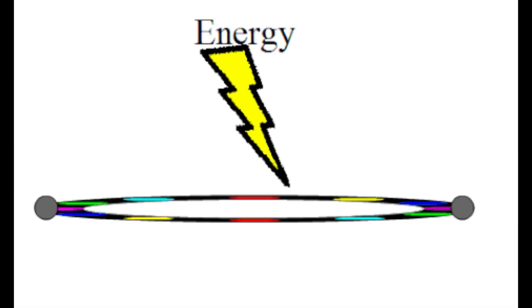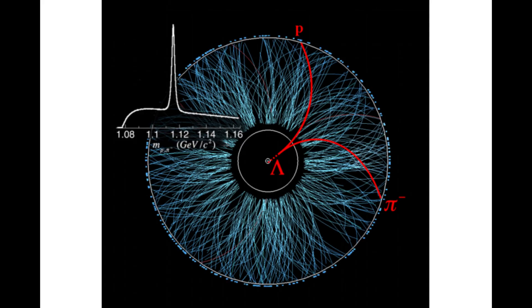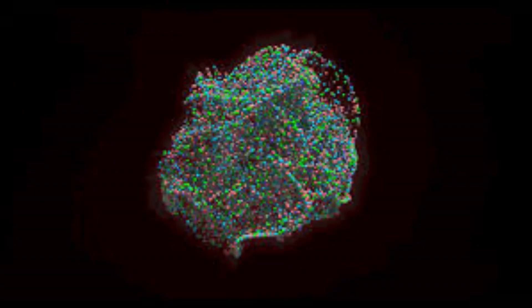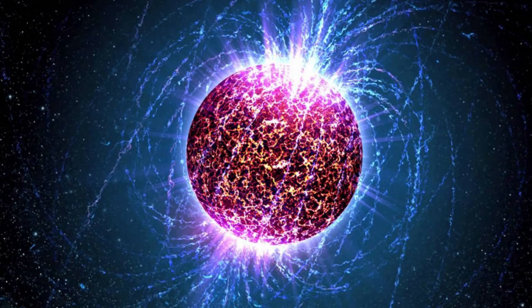At high densities but relatively low temperatures, quarks are theorized to form a quark liquid whose nature is presently unknown. It forms a distinct color-flavor-locked phase at even higher densities. This phase is superconductive for color charge. These phases may occur in neutron stars, but they are presently theoretical.